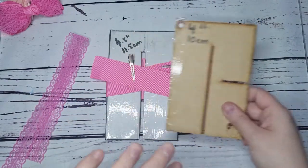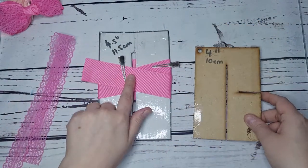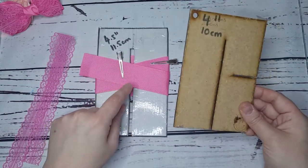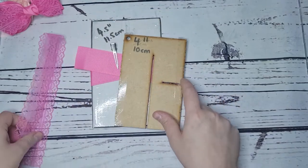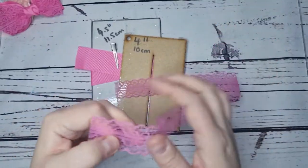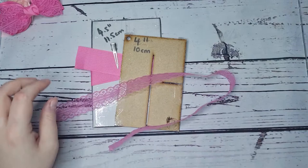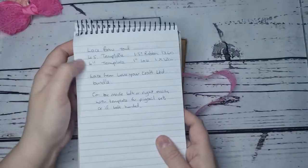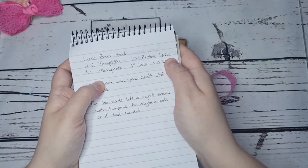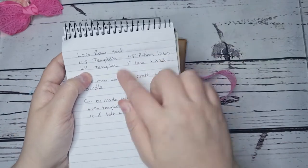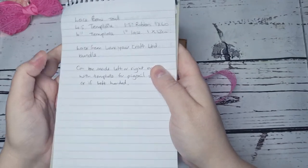I've already got it wrapped on the four and a half inch template just to save us some time. We're going to wrap it exactly the same way on the four inch template with our one inch wide ribbon. Your measurements are: 1.5 inch template, 1.5 inch ribbon, 60 centimeters; four inch template, one inch lace, 52 centimeters.